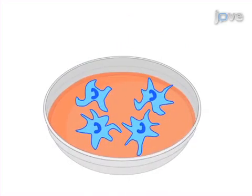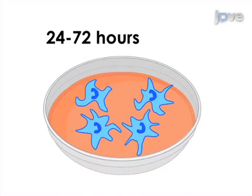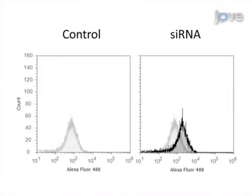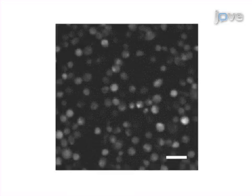The final steps are to reseed and further differentiate the cells. Ultimately, successful gene knockdown or overexpression can be shown through quantitative real-time PCR, Western blot, FACS, and so forth.